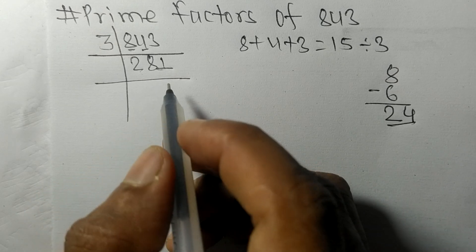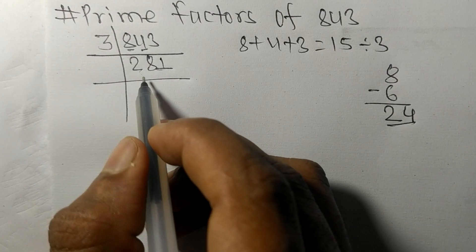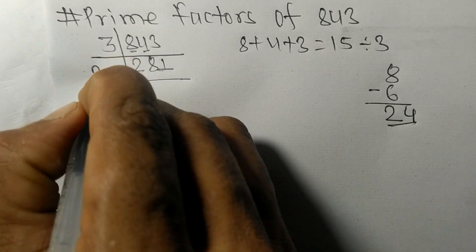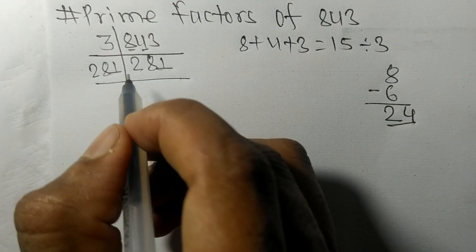Now we got 281, which is a prime number, so it is exactly divisible by 281 only. On dividing, we get 1.